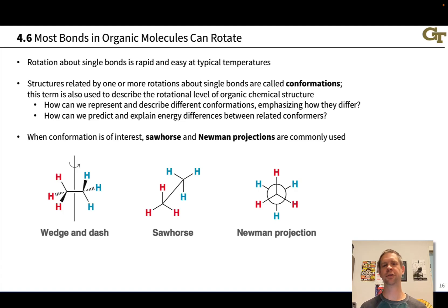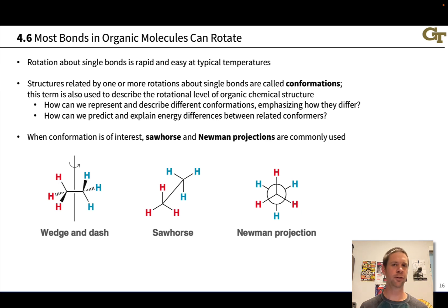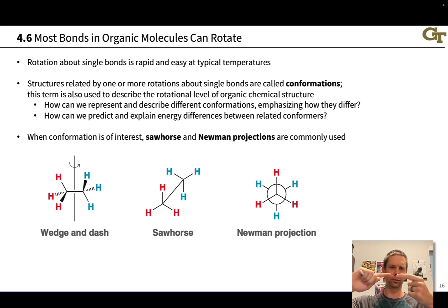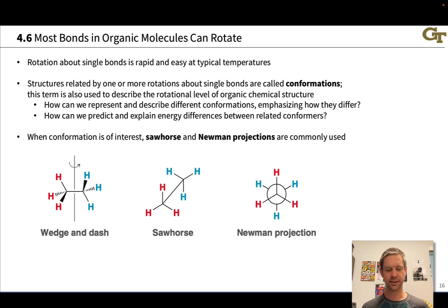In this video, we're going to introduce the idea of conformation, and particularly representations of conformation. Conformation refers to this level of organic structure involving rotations around single bonds. Because single bonds are made from the coaxial or head-on overlap of orbitals, rotation about a single bond doesn't break it. So rotation tends to be very rapid and very easy at typical temperatures where we deal with organic compounds.